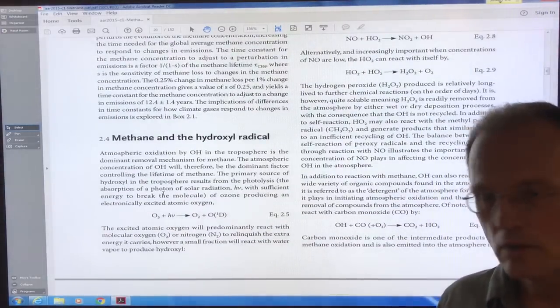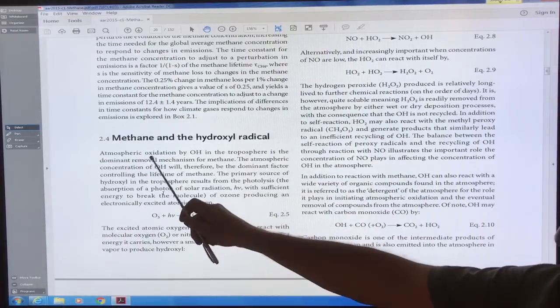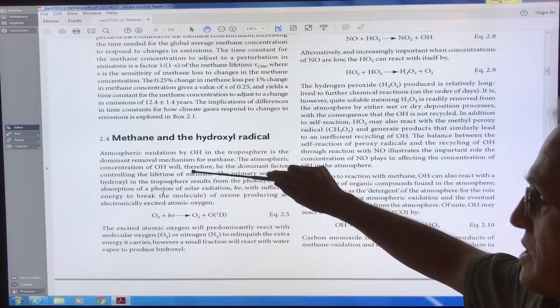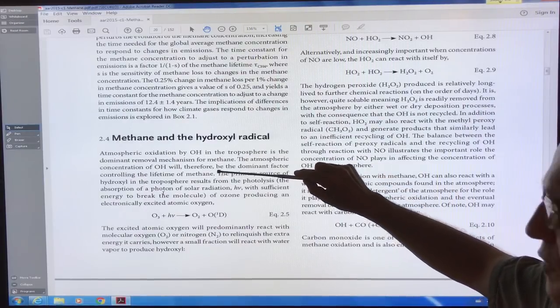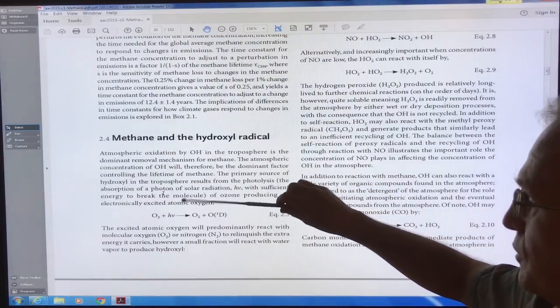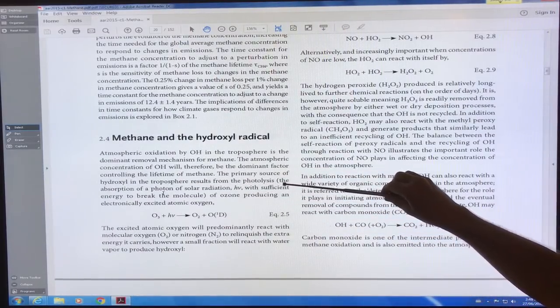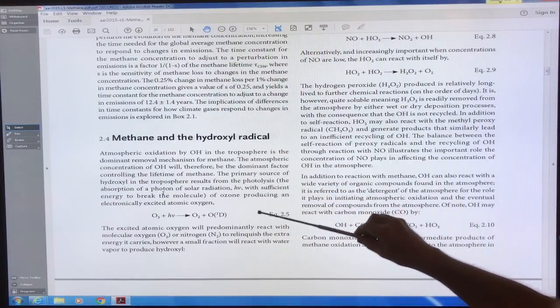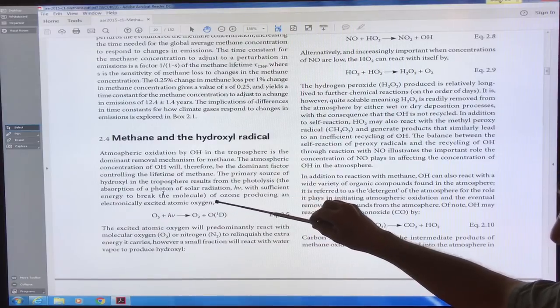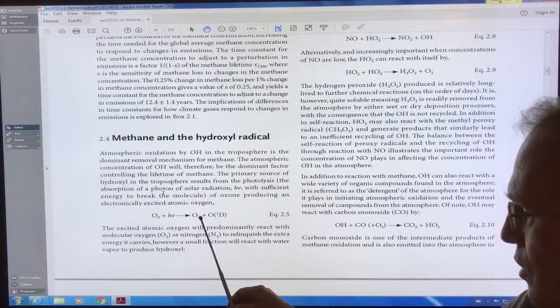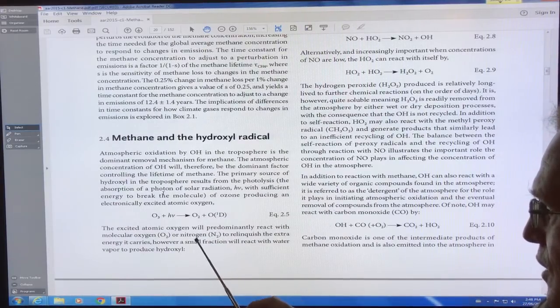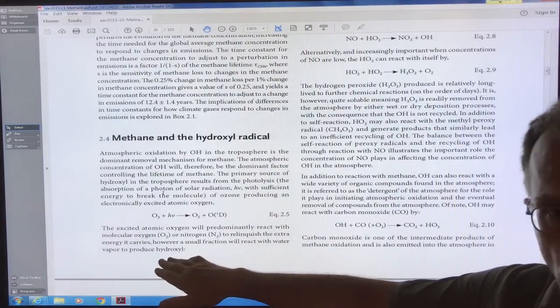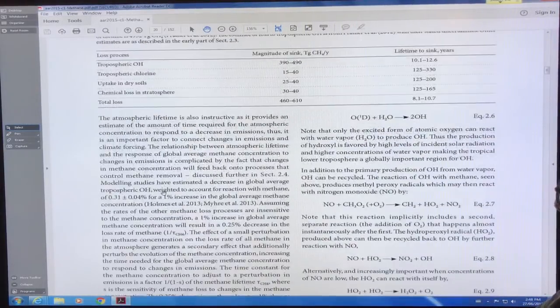There's also ozone involved here. Atmospheric oxidation by OH minus in the troposphere is the dominant removal mechanism. So the concentration of OH is therefore the dominant factor controlling the removal of methane or the lifetime of methane. The primary source of hydroxyl in the troposphere results from the photolysis, the absorption of a photon of solar radiation H nu with sufficient energy to break the molecule of ozone, producing an electronically excited atomic oxidant. So ozone is broken down by sunlight into O2 plus atomic oxygen. The atomic oxygen reacts with O2 or nitrogen to give up the extra energy. A small fraction reacts with water to produce the hydroxyl. So you need the sunlight.